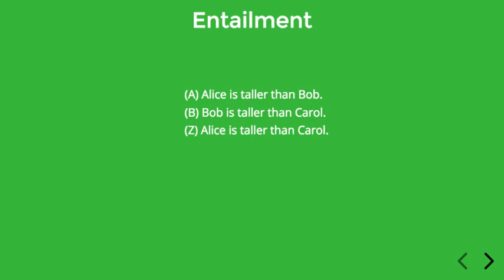So in these cases, we'll say that A and B entail Z. These simple examples illustrate a very interesting point: that certain sentences can be related to each other in such a way that if you accept some of the sentences as true, then you have to accept others as true as well, if you want to be rational. This relationship between sentences is known as entailment, and it's one of the central topics we'll be exploring in this class. So we would say that A and B together entail Z.